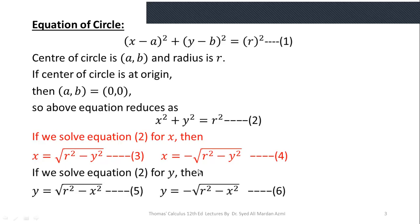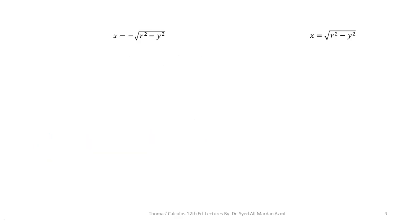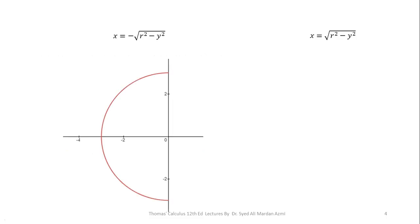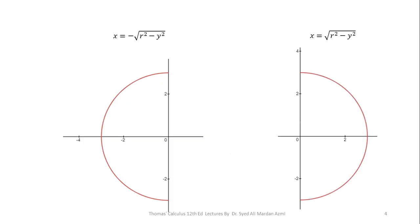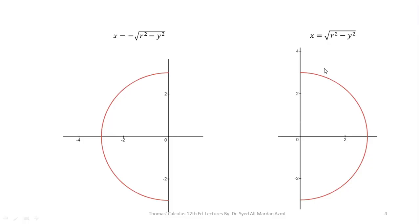If we solve x² + y² = r² for x, we get equations 3 and 4; solving for y gives equations 5 and 6. Equation 2 represents a complete circle with center at the origin. x = −√(r² − y²) represents the semicircle where x is negative — in the left half-plane or second and third quadrants. x = √(r² − y²) represents the semicircle where x is positive — in the right half-plane or first and fourth quadrants.